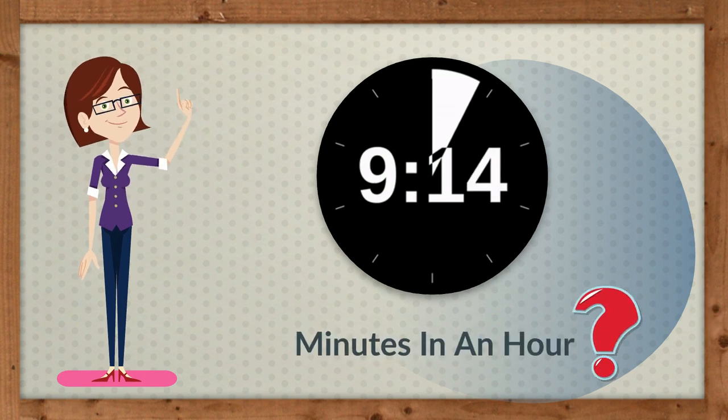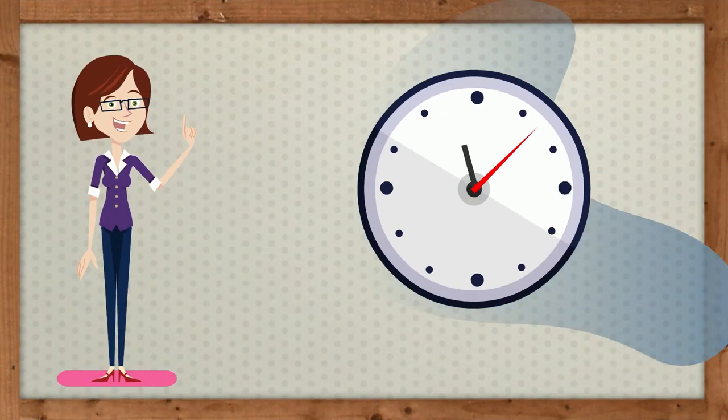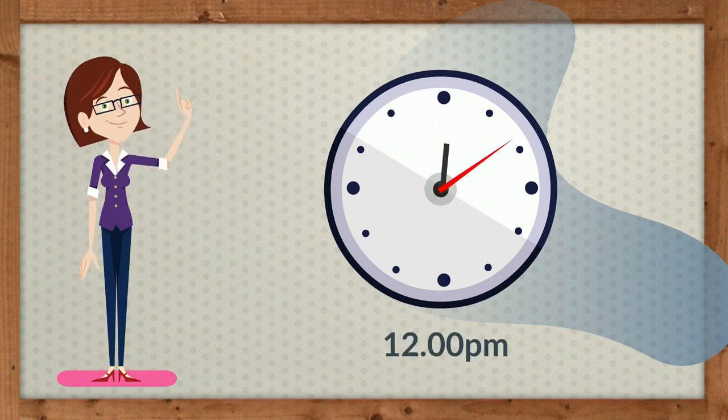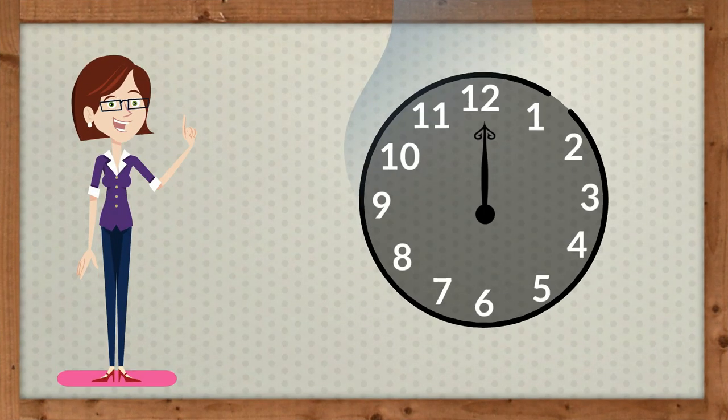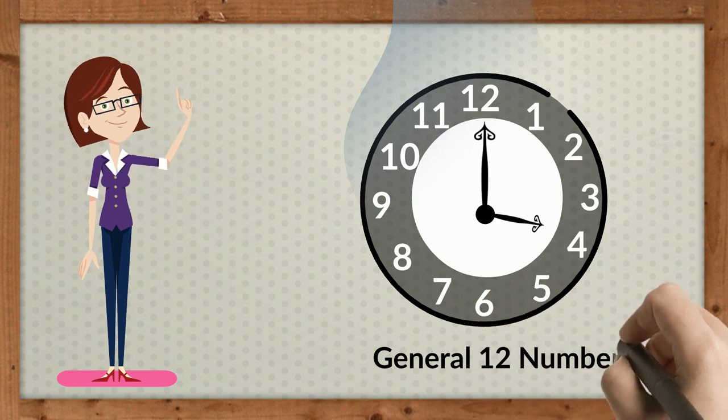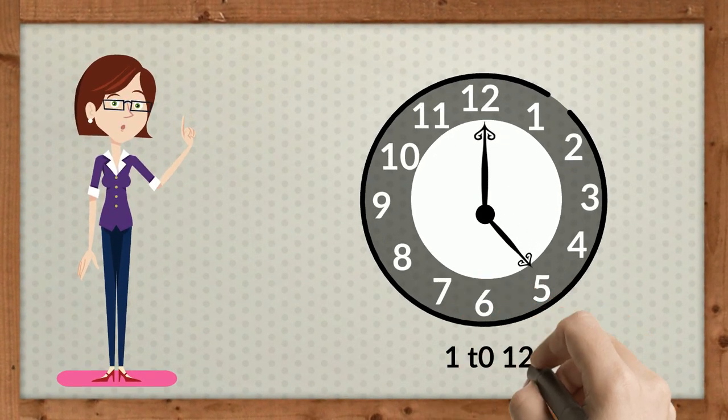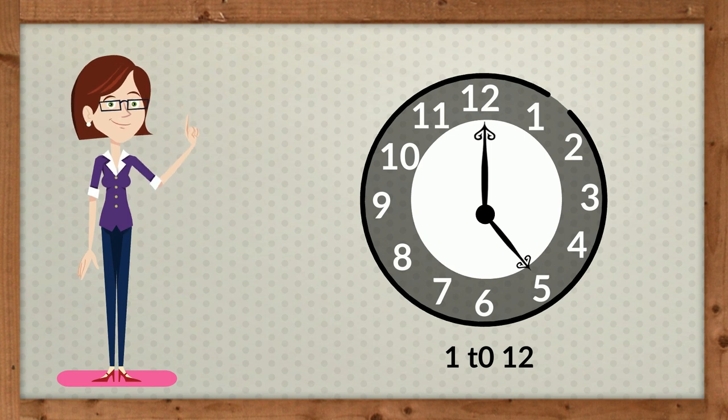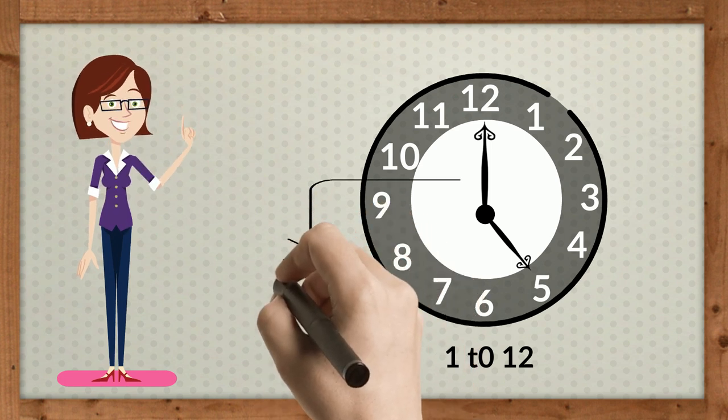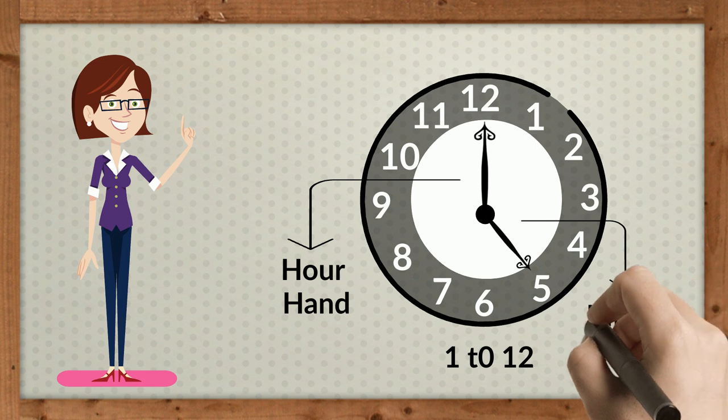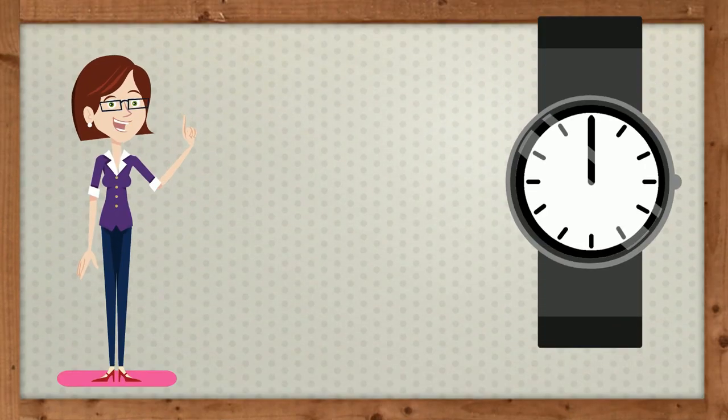This is a clock which shows us time. A clock in general has 12 numbers written on it from 1 to 12. It has an hour hand and a minute hand. The time is usually based on 12 hour clock.